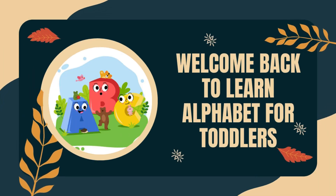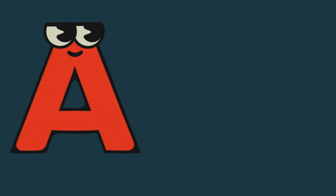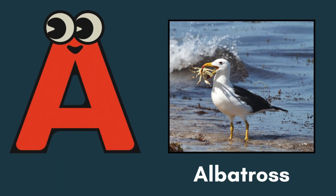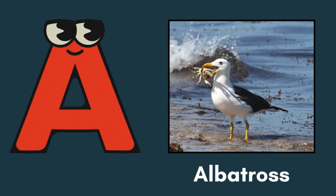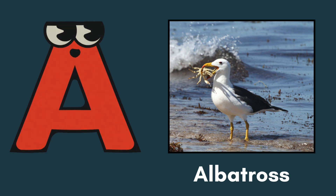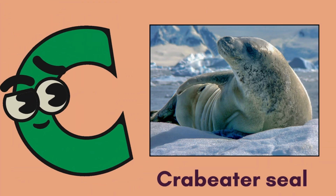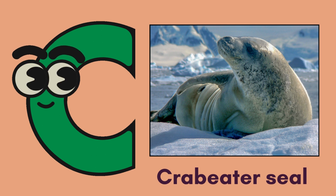Welcome back to Learn Alphabet for Toddlers. A for albatross. B for blue whale.